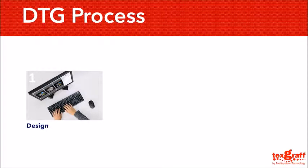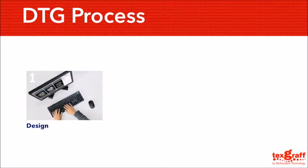Now we're going to talk about the process of DTG printing. First is to design your artwork from any imaging software, followed by using the RIP software. The RIP software is basically the software used to determine the quality settings you prefer that will be printed onto your garment. The settings could be on a draft mode for higher production or on a higher quality resolution to get an excellent printout quality. It is your choice to either compromise high quality or time and money. This software can also determine how much the print settings will actually cost you.